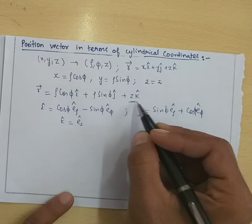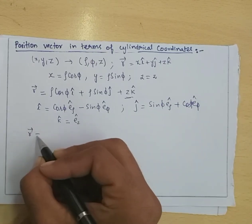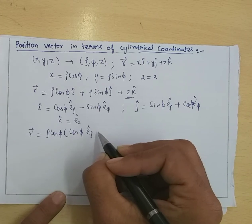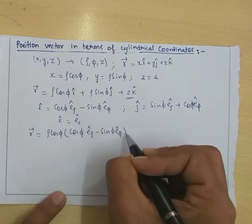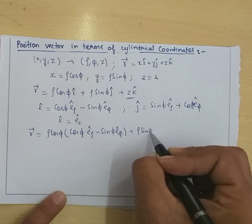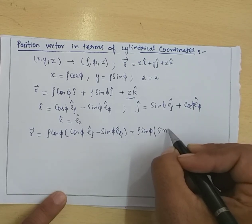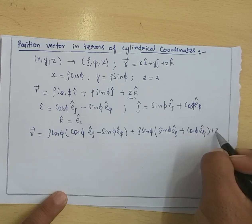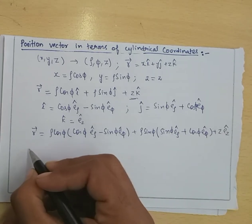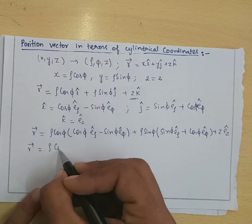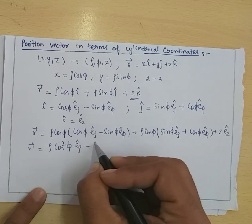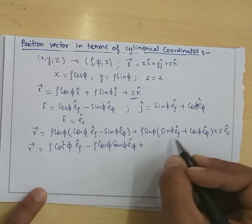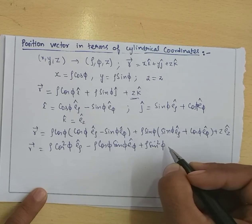If we put these substitutions in, the position vector becomes: R = Rho·cos(Phi)·[cos(Phi)·E_rho-cap minus sin(Phi)·E_phi-cap] plus Rho·sin(Phi)·[sin(Phi)·E_rho-cap plus cos(Phi)·E_phi-cap] plus Z·E_z-cap. Expanding: R = Rho·cos²(Phi)·E_rho-cap minus Rho·cos(Phi)·sin(Phi)·E_phi-cap plus Rho·sin²(Phi)·E_rho-cap plus Rho·sin(Phi)·cos(Phi)·E_phi-cap plus Z·E_z-cap.